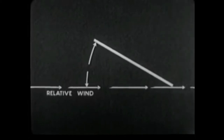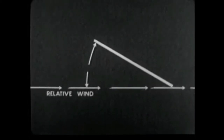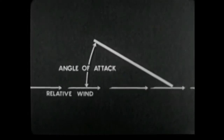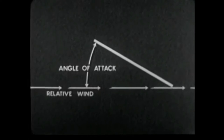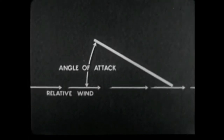The acute angle between the relative wind and the face of the plate is called the angle of attack. This angle may have any value from zero to 90 degrees and may be either positive or negative.